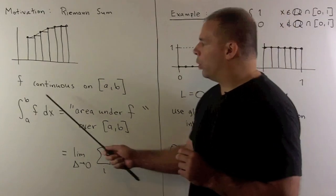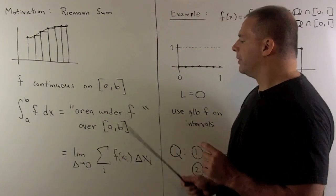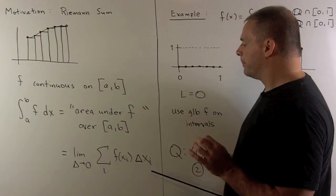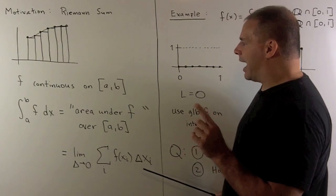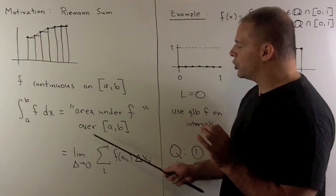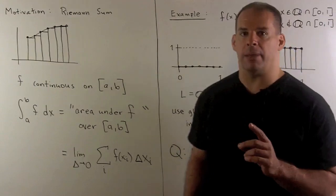With the continuity condition, this limit is always going to exist, and all the choices of sample points give us the same limit.